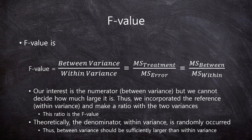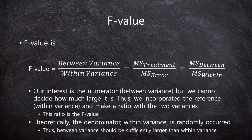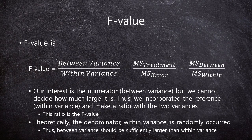In the prior video, we understood conceptually what the F value is. The F value is the ratio of between and within variance. The reason why we use within variance is the same as in the T value — we need a kind of reference number. The within variance theoretically occurs randomly and represents meaningless deviation. So if the between variance is smaller than within variance, there is no difference among our groups. Our interest is the numerator — the between variance — but we cannot decide how large it is, so we incorporate the within variance as a reference and make a ratio. This ratio is the F value.